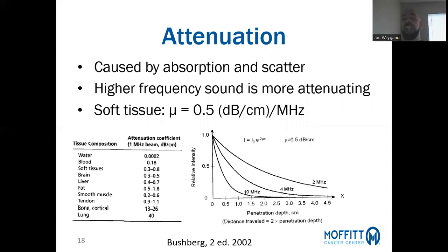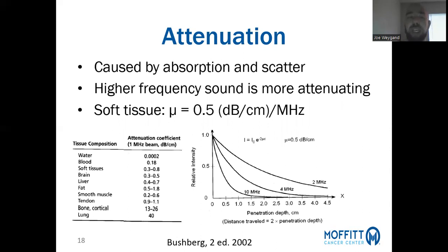Attenuation is caused by absorption and scatter. Higher frequency sound is more attenuating — a 2 MHz beam penetrates quite deeply into a patient, while a 10 MHz beam may only penetrate about 2 centimeters. The attenuation coefficient for soft tissue is approximately 0.5 dB per centimeter per megahertz.